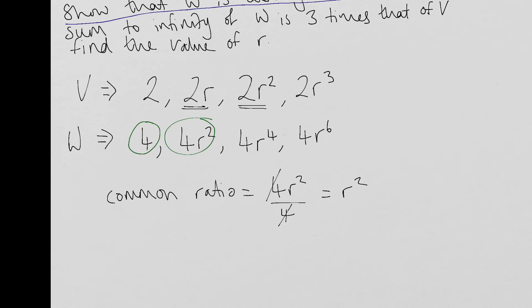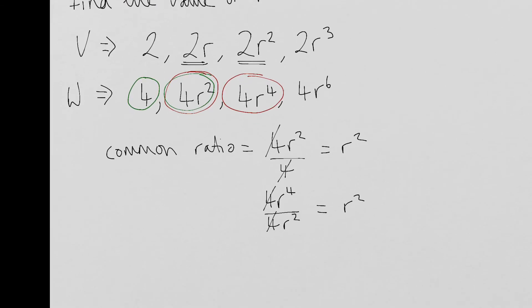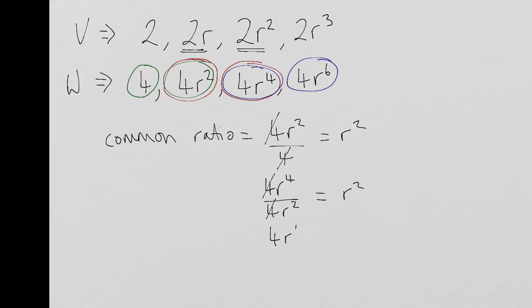Let's have a look at the common ratio for the next two terms. So 4R to the power of four and 4R squared. So the fours cancel and we also get R squared. And if you wanted to, you could go on to the next one as well. There's no need, though, at this point. You know, two is enough to prove it. So 4R to the power of six divided by 4R to the power of four. They are also going to cancel to give me R squared.